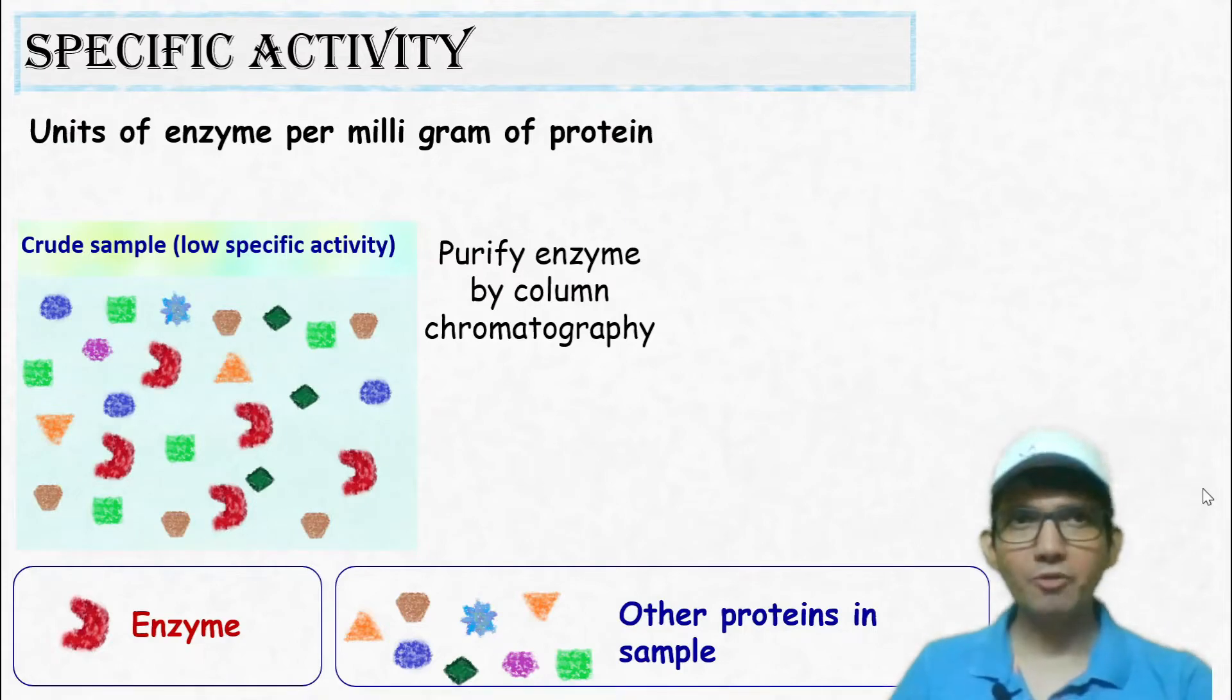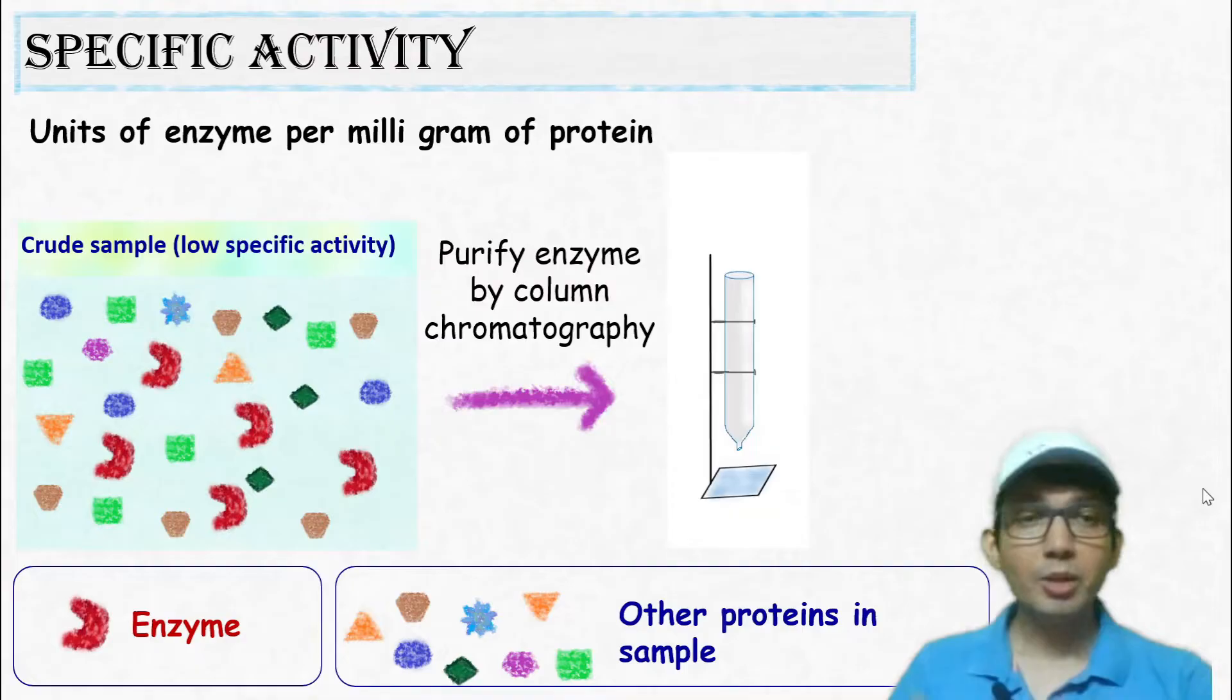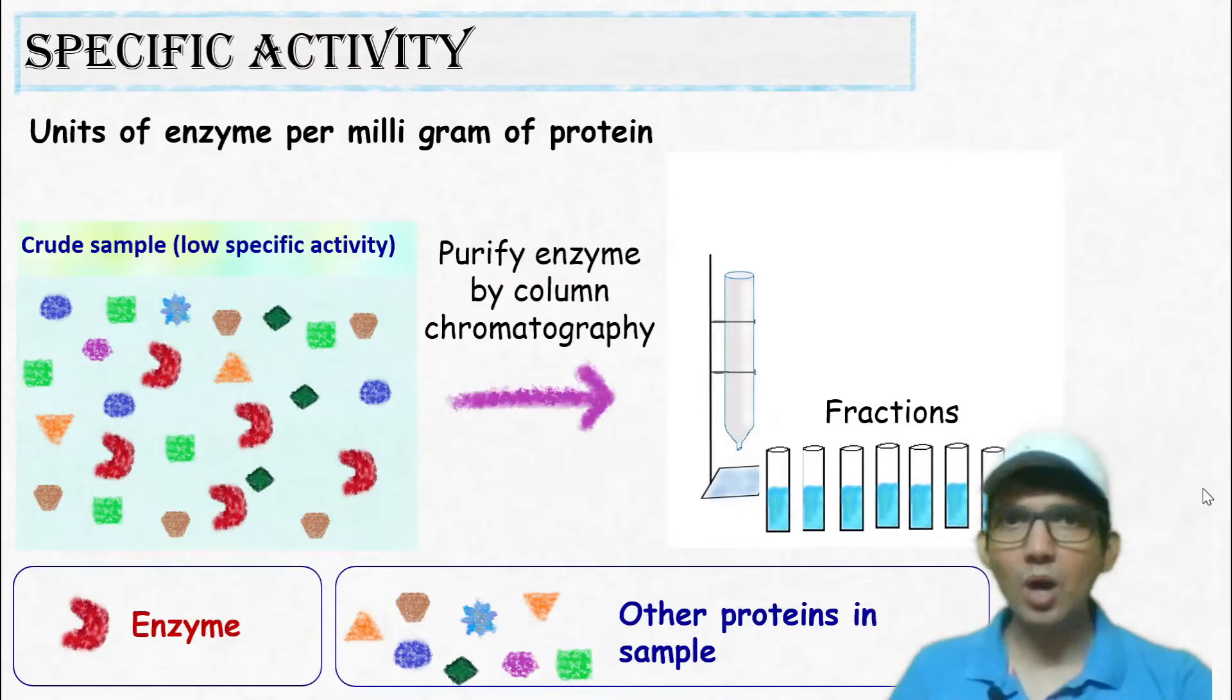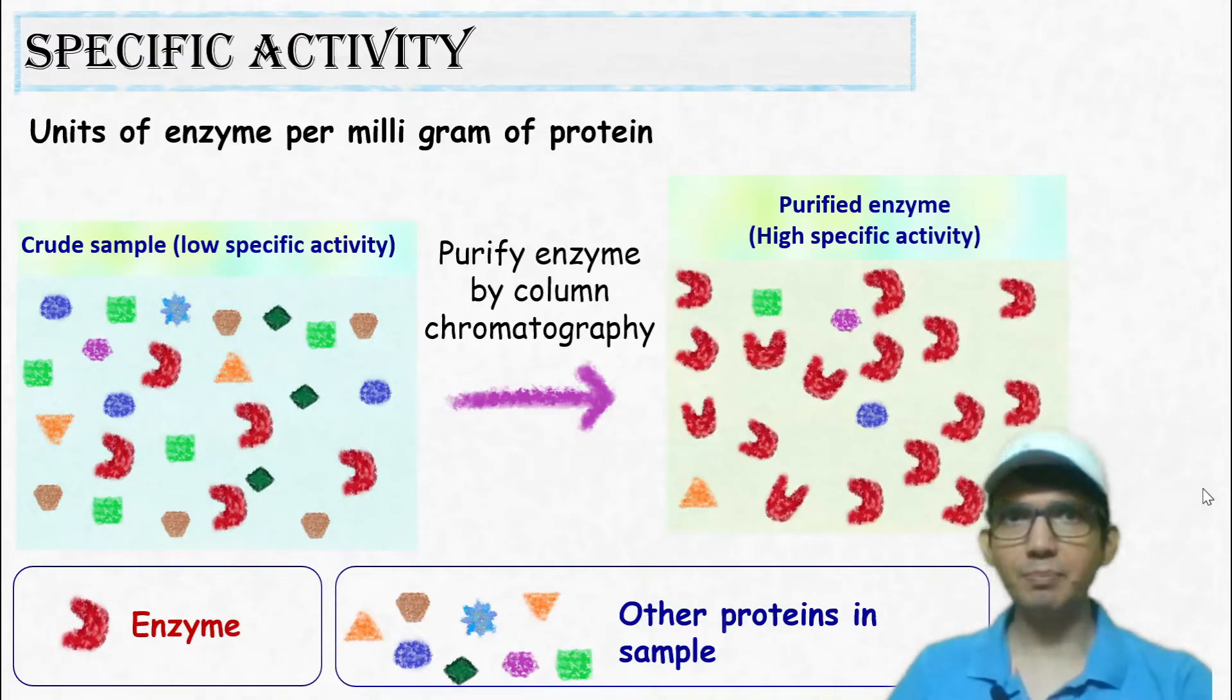Now let's say you purify this enzyme by column chromatography. During purification, we collect fractions, and one of the fractions will have the purified enzyme.